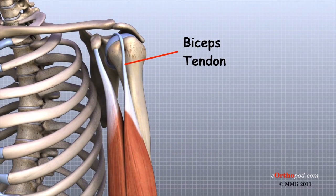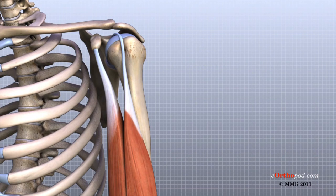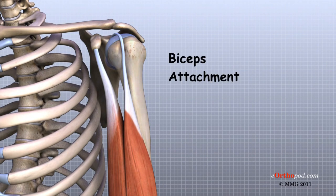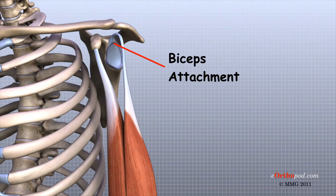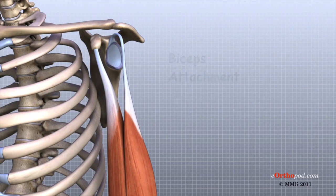Tendons are much like ligaments except that tendons attach muscles to bones. Muscles move the bones by pulling on the tendons. The biceps tendon runs from the biceps muscle across the front of the shoulder to the glenoid. At the very top of the glenoid, the biceps tendon attaches to the bone and actually becomes part of the labrum. This connection can be a source of problems when the biceps tendon is damaged and pulls away from its attachment to the glenoid.